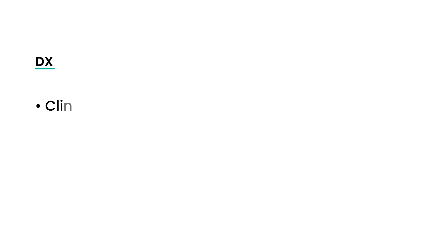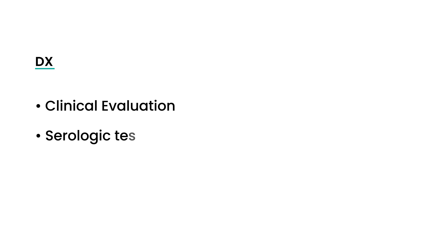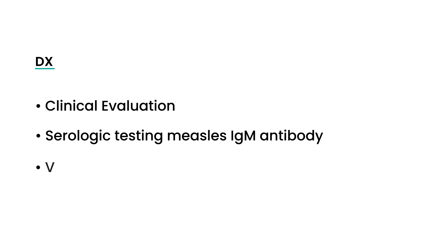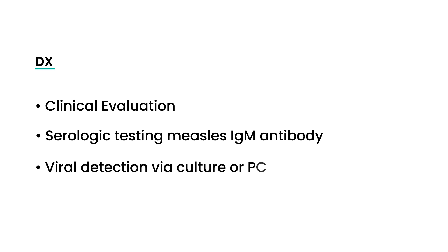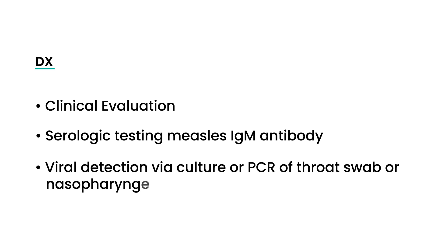Diagnosis. Measles is really a clinical diagnosis based on physical exam and symptomatology. But you can do blood tests measuring the measles IgM antibody, and you can also detect the virus by doing a culture or PCR of either the throat swab or a nasopharyngeal swab.